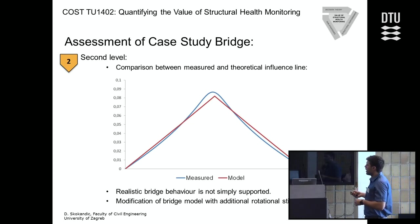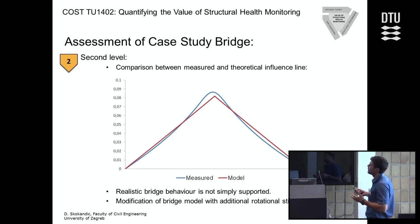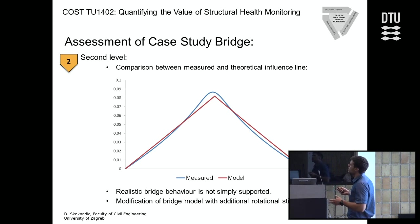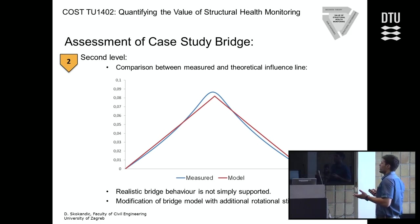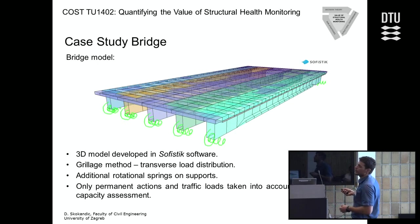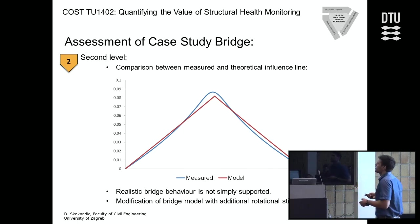In the second level, I calculated a theoretical influence line from my model, and from WIM data we calculated a real measured influence line. As shown here, the red curve is theoretical — with the shape expected for a simply supported beam — and the blue one is measured. We can see a clear difference: our bridge is not 100% simply supported.